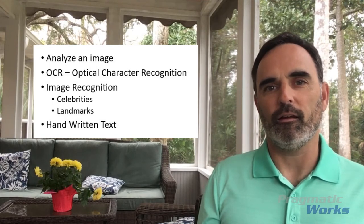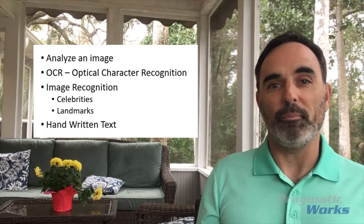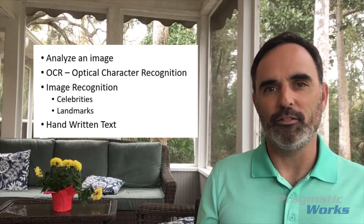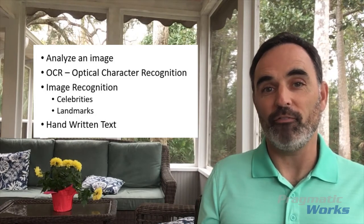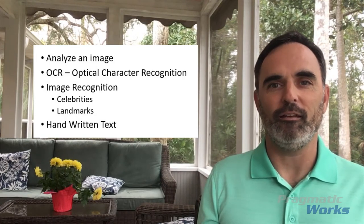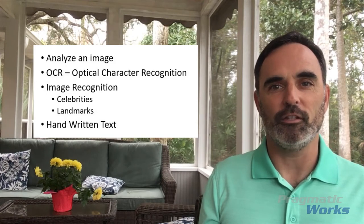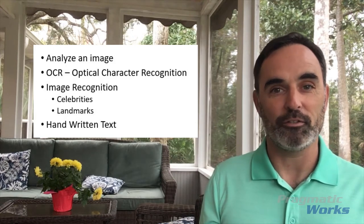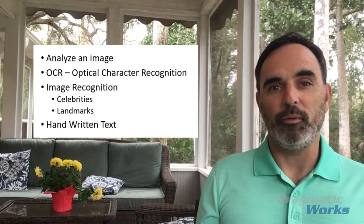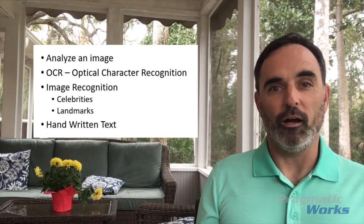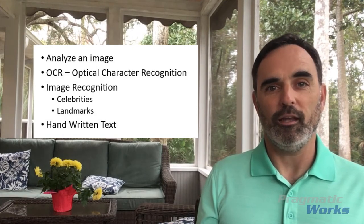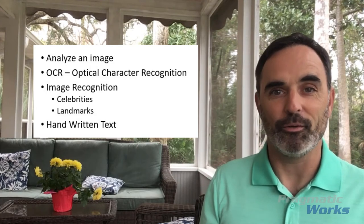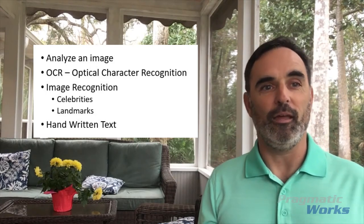With people, it can recognize whether there are faces in an image, perhaps the gender of the faces, and it'll actually attempt to determine the age of people in a picture. It can also be used for OCR, or optical character recognition — in simple terms, that's reading text from an image.